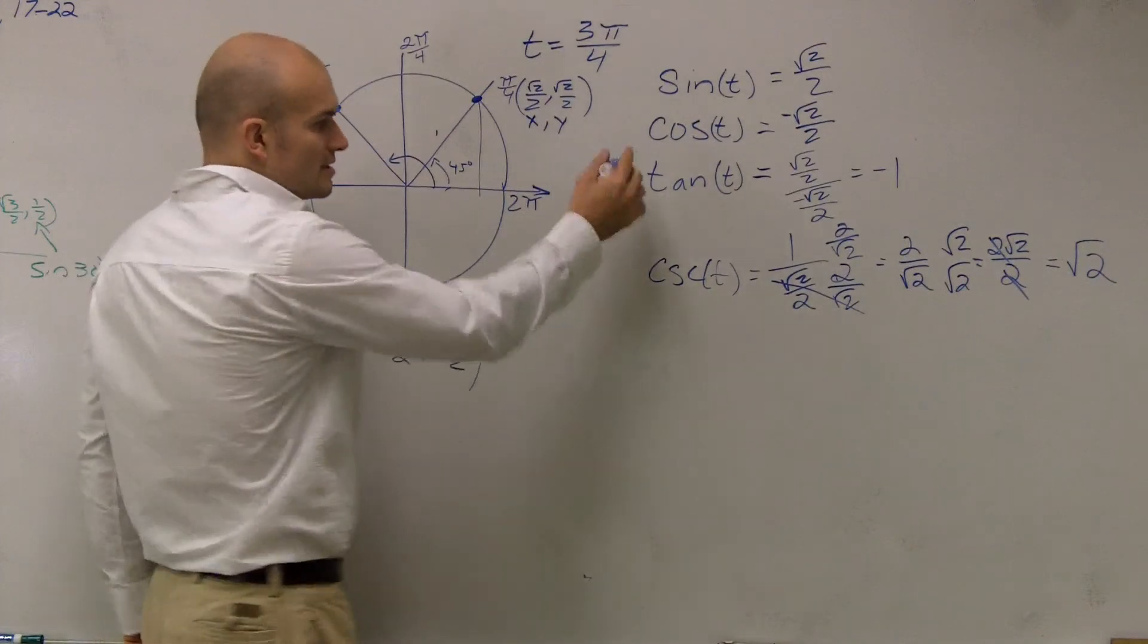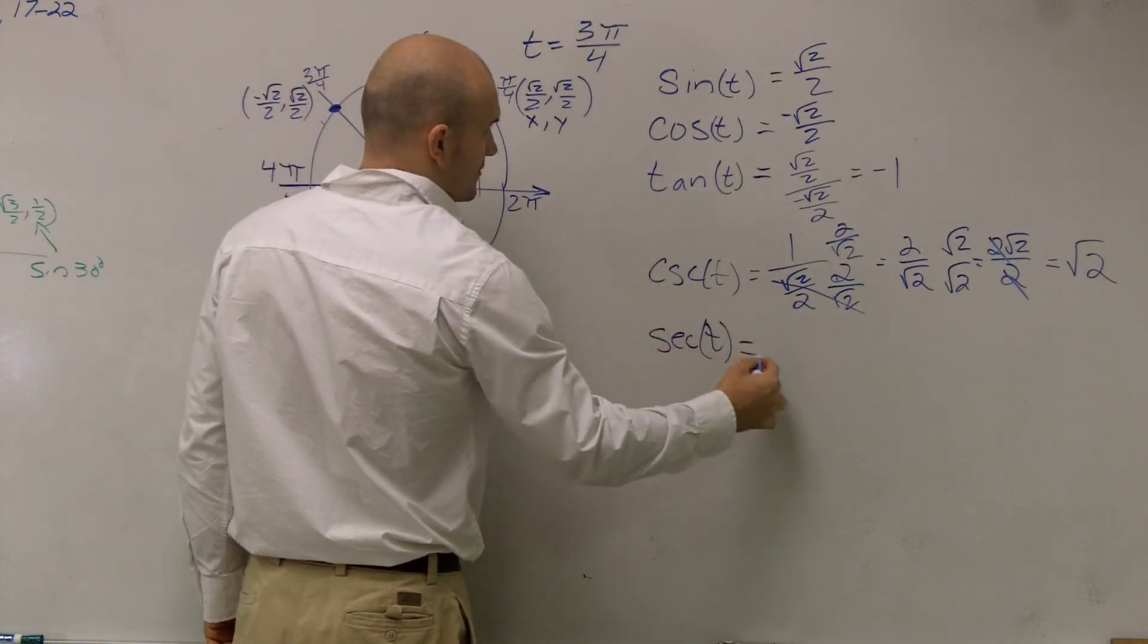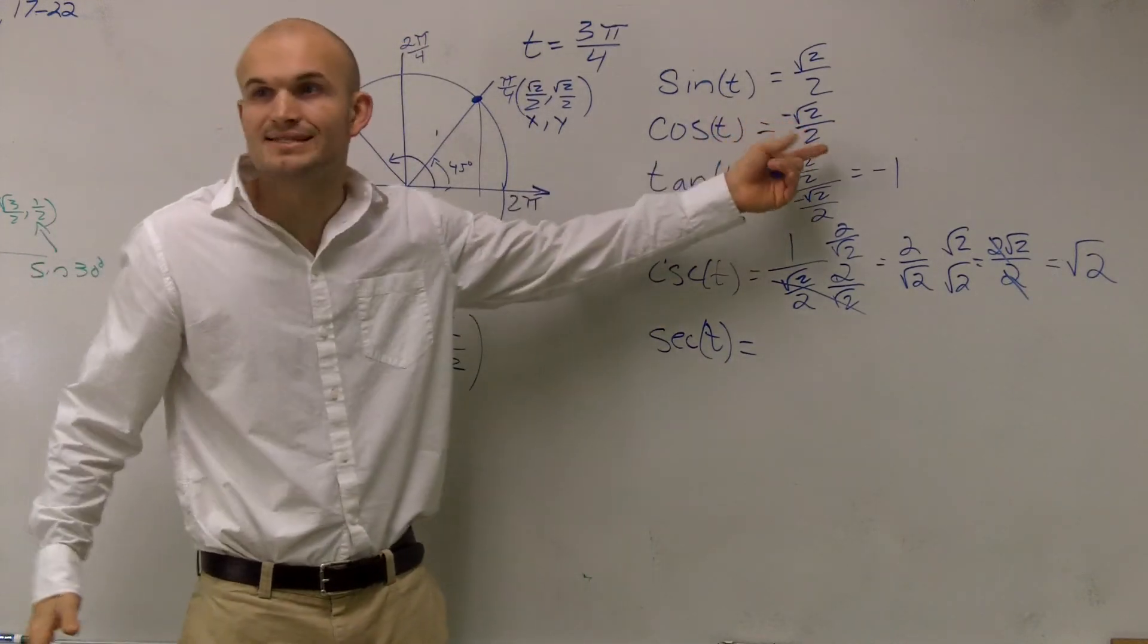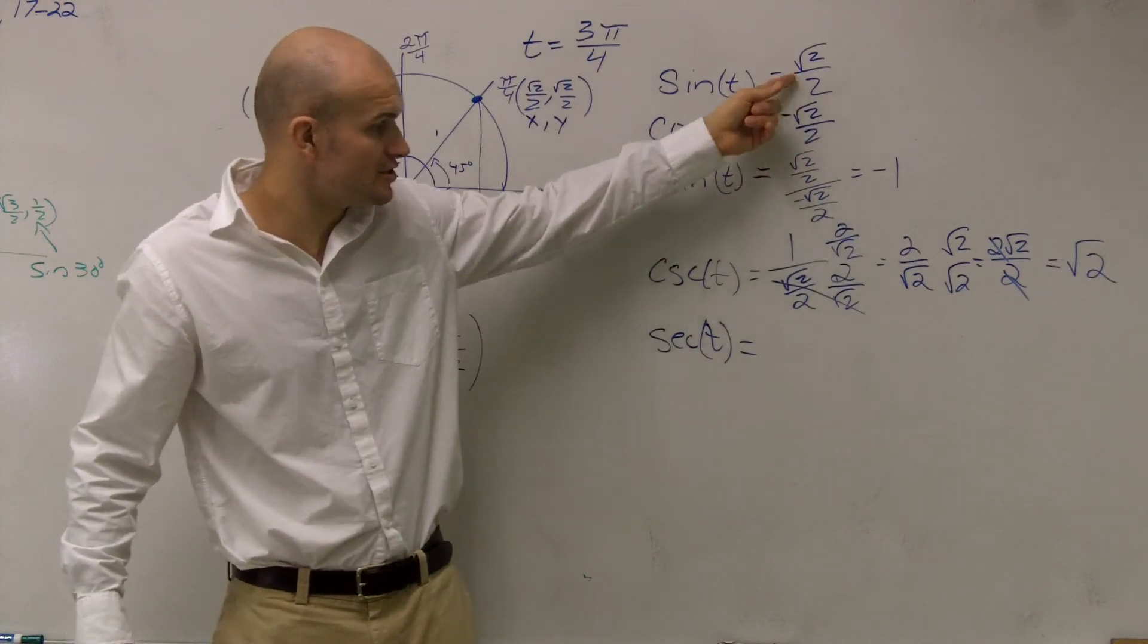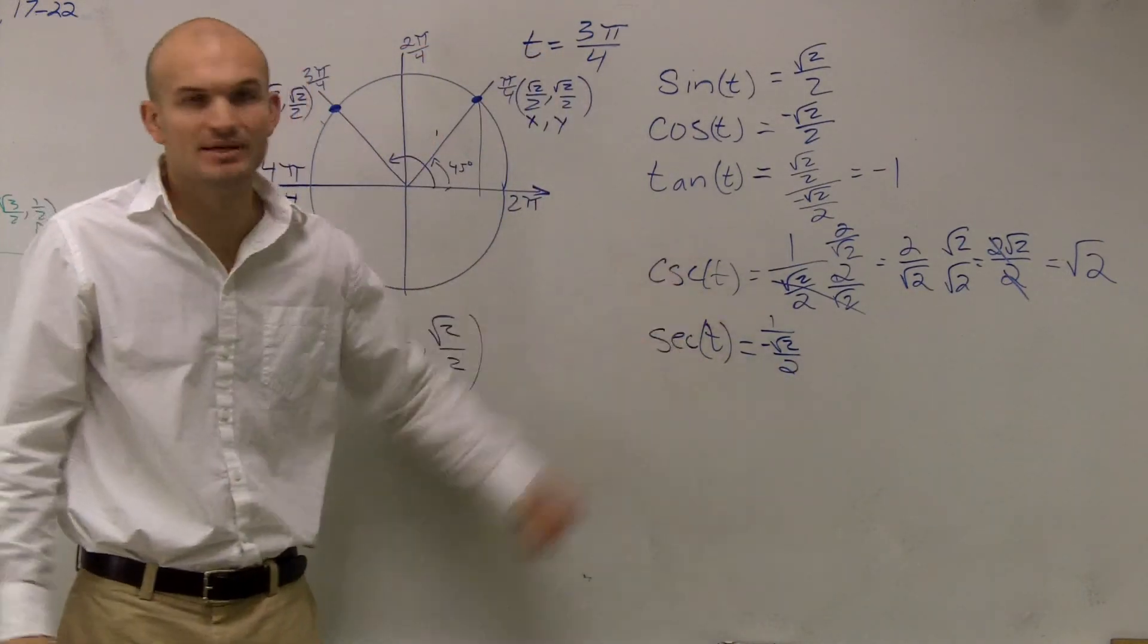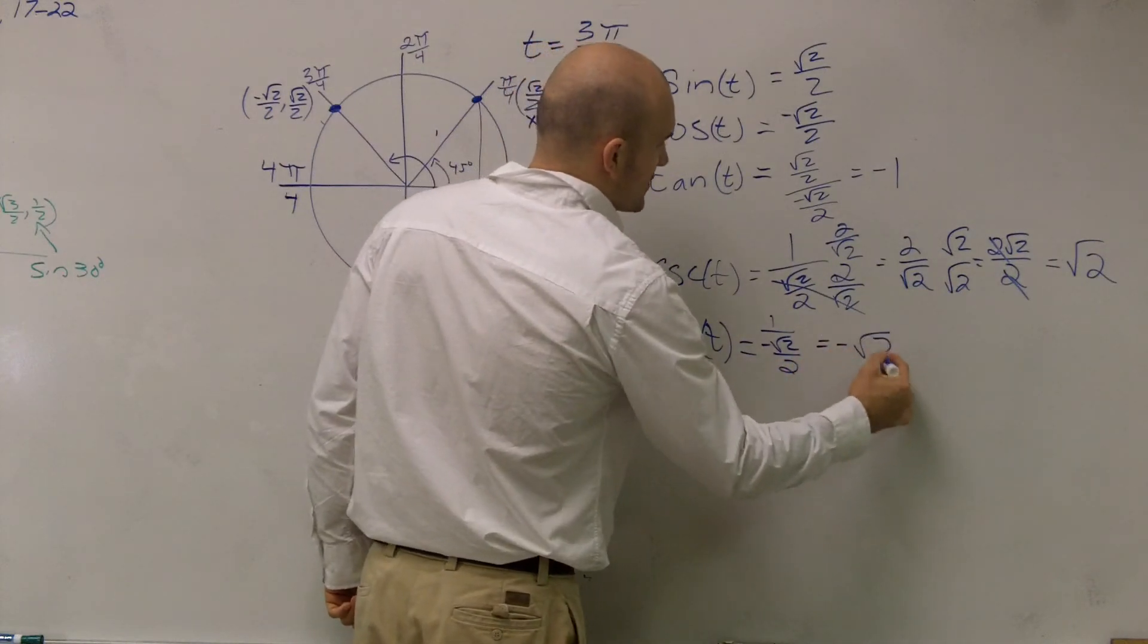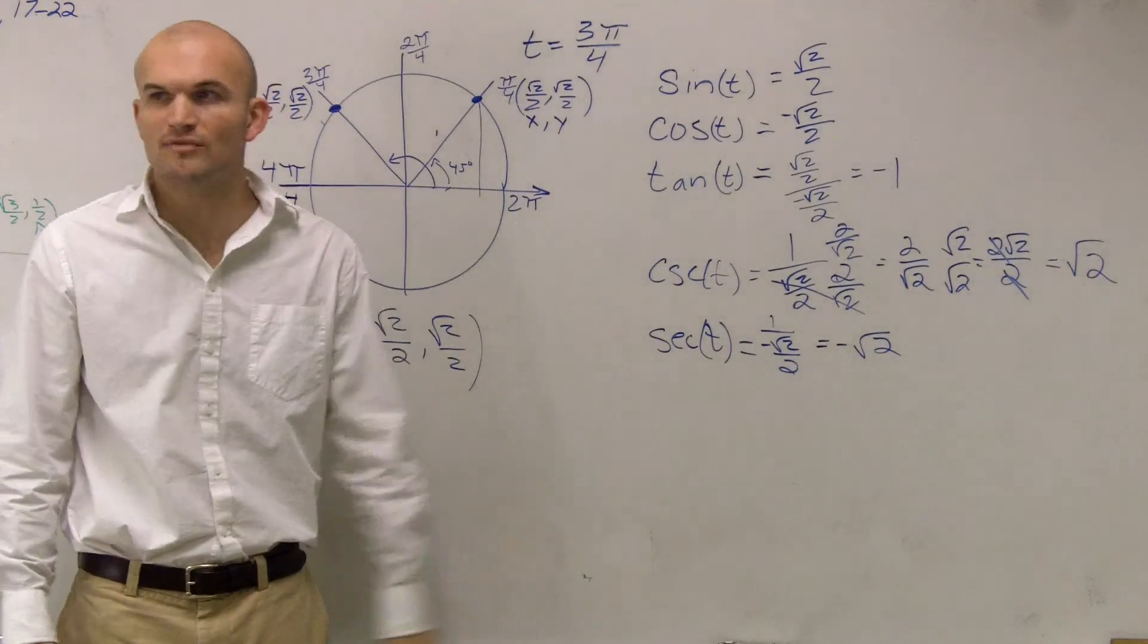Now here's the cool thing though. Secant of t is going to be 1 over the negative of that. It's the same number, right? It's just negative. Correct? Does everybody see that? Yeah. It's just 1 over negative √2/2. I'm not going to do all that math again. It's going to be the exact same thing. So the answer I know is going to be negative √2. It's the same numbers, it's just negative. Right? So you can simplify it a little bit.